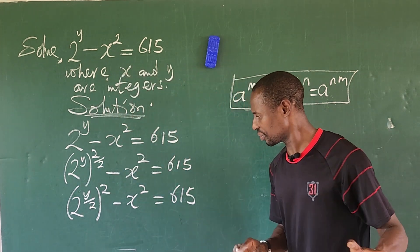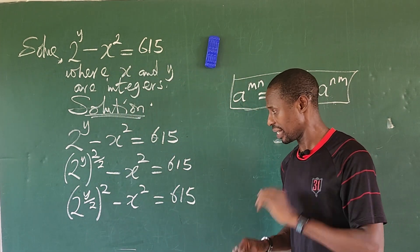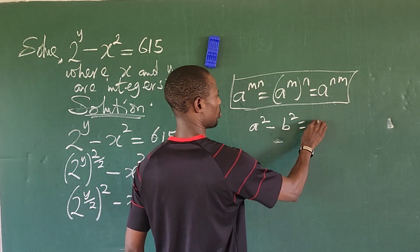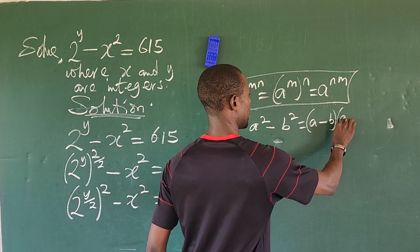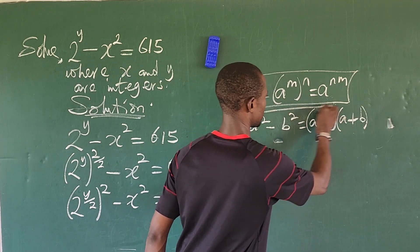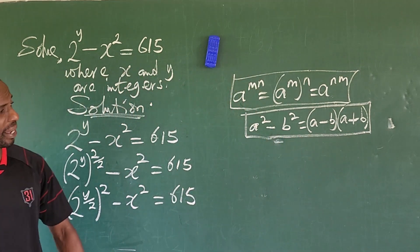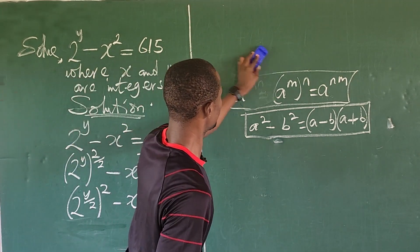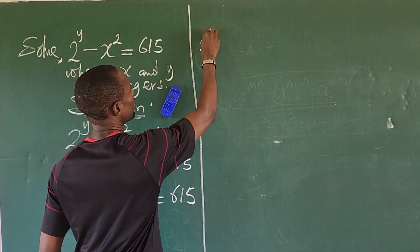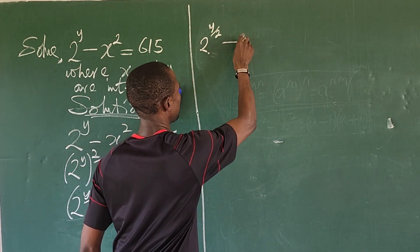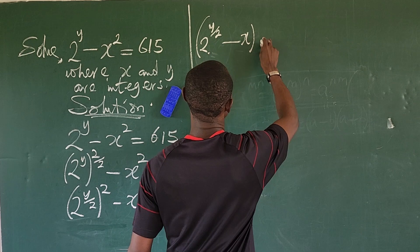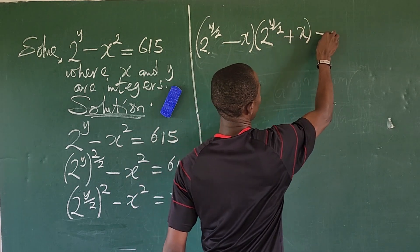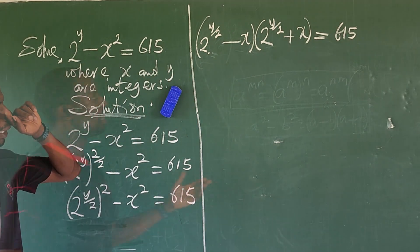The difference of two squares says a² minus b² equals (a minus b)(a plus b). Applying this law, we get: (2^(y/2) minus x) times (2^(y/2) plus x) equals 615. Now the next thing is to handle the right side — we need to find all the factor pairs of 615.